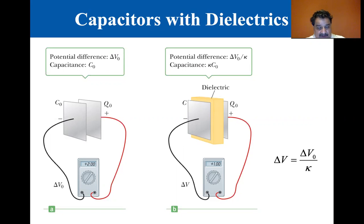So Delta V is equal to Delta V zero divided by kappa. So in this case, it looks like kappa is a two because it's reduced by one half. It was two volts, now it's down to one volt.